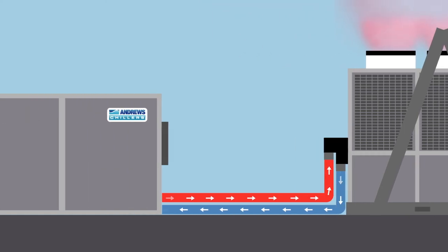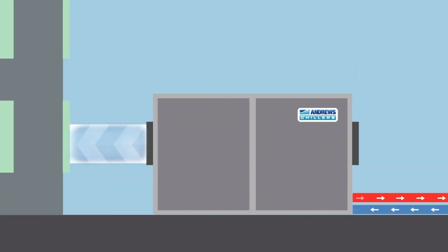These larger units use the same principle as the smaller fan coils. Ducting connects the air handler to the building as the cooled air is blown into the area while the warm air is extracted.